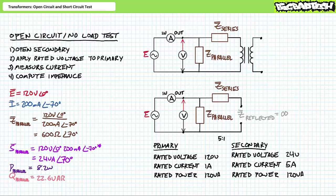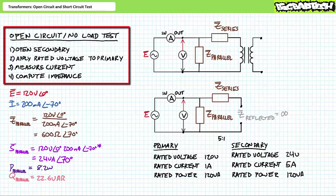In summary, to perform the open circuit or no load test on a transformer: one opens the secondary, applies the rated voltage to the primary, and measures current flowing in the primary. The impedance, apparent real and reactive power consumed by the parallel impedance inside the transformer equivalent circuit can then be calculated by an individual well-versed in AC Ohm's law and power calculations.